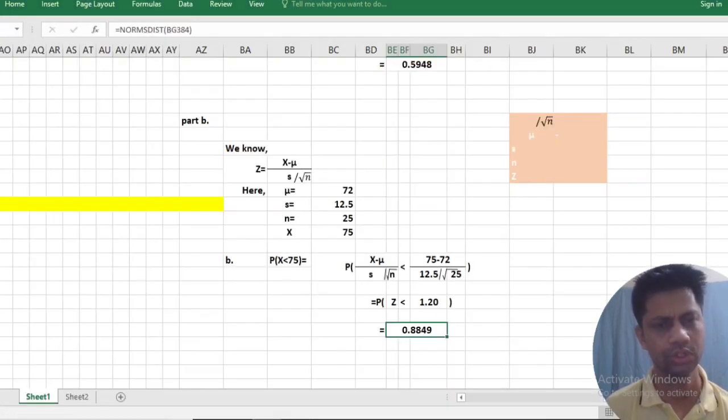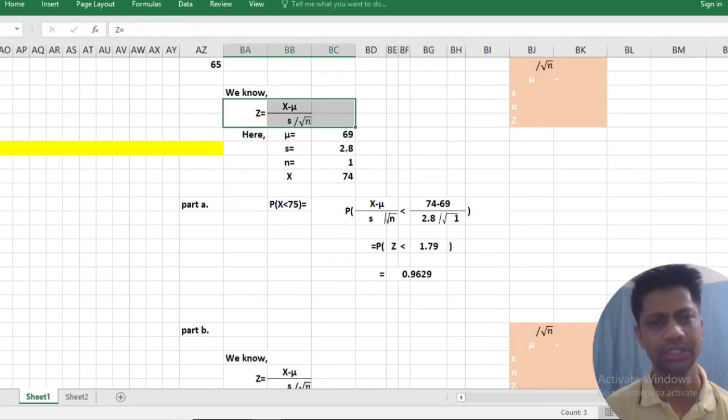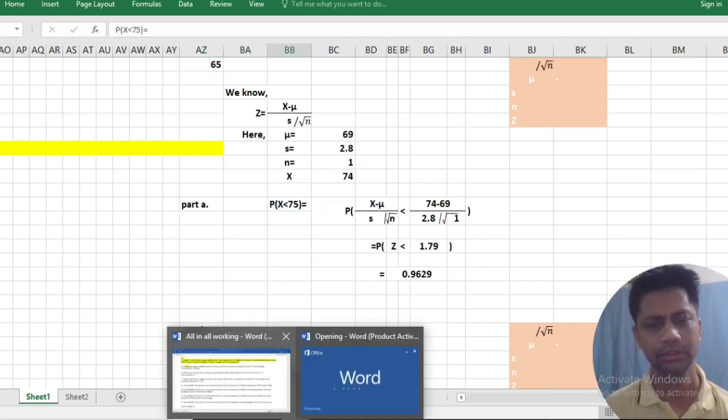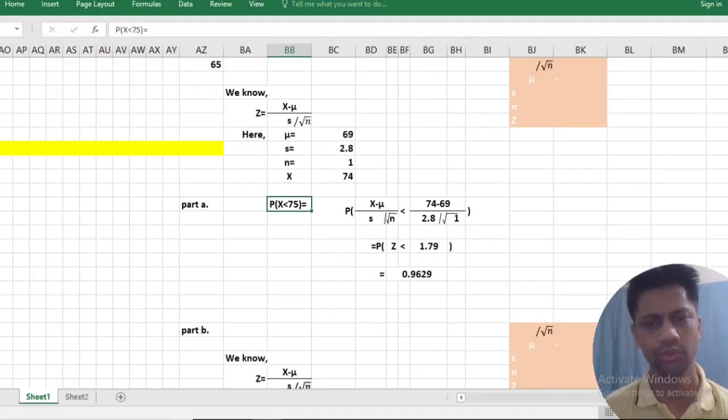Solution: We know that Z equals X minus mean divided by standard deviation. Without bending means height less than 74 inches.